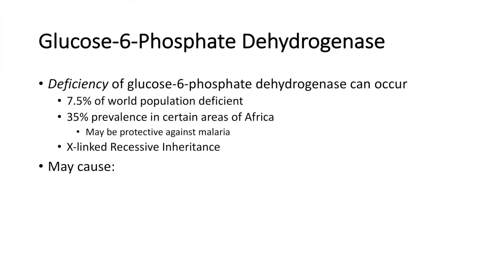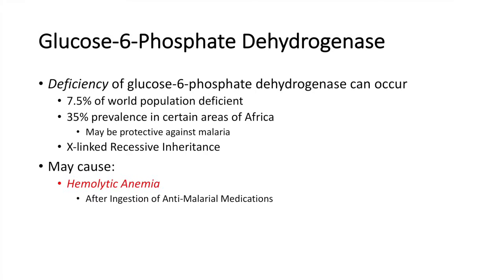Being deficient in glucose-6-phosphate dehydrogenase can cause several symptoms. One is hemolytic anemia — since erythrocytes depend critically on the pentose phosphate pathway for NADPH generation and oxidative stress capacity. Hemolytic anemia can be triggered by ingestion of anti-malaria medications, or even by eating fava beans — a condition called favism. Any type of abnormal stress on the cell can cause hemolytic anemia in people deficient in this enzyme.